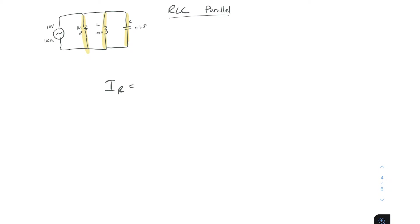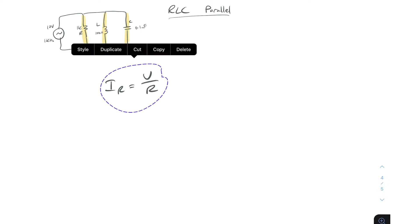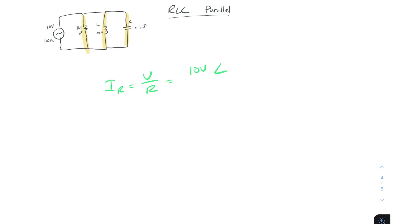Let's do the current through the resistor first since that's the easiest. IR equals V over R, so the voltage is 10 volts at a phase shift of zero degrees divided by 1 kilohm at zero degrees. That gives us 10 milliamps at a phase shift of zero degrees.